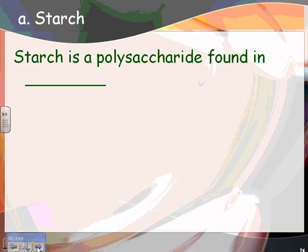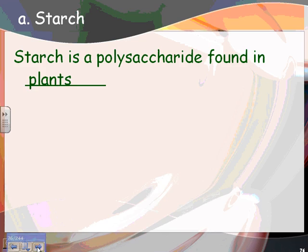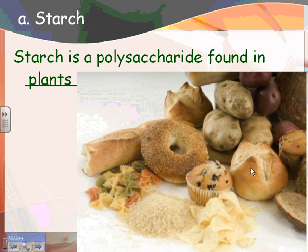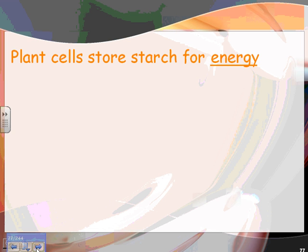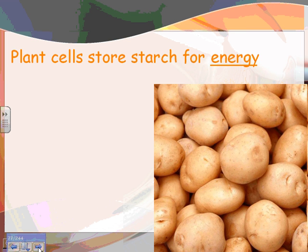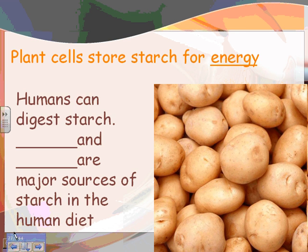Starch is a polysaccharide found in plants. Potato chips and potatoes are both starch. Things like bread, bagels, and muffins are usually made from wheat — though gluten-free breads can be made from rice or other grains. Pasta is also made from wheat, and rice is another source. Plant cells store starch for energy.